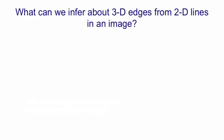I want to give an example of this to make the idea clearer. In order to give the example, I need to go into a little bit of detail about what you can infer when you see a 2D line in an image. What does that tell you about the 3D world?